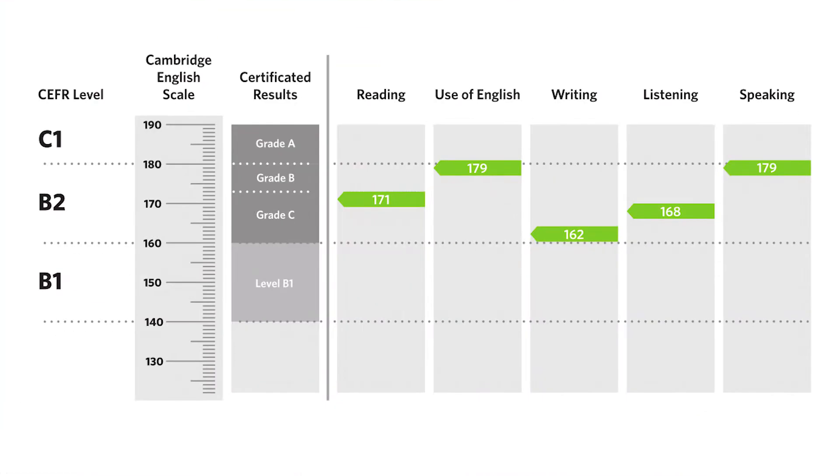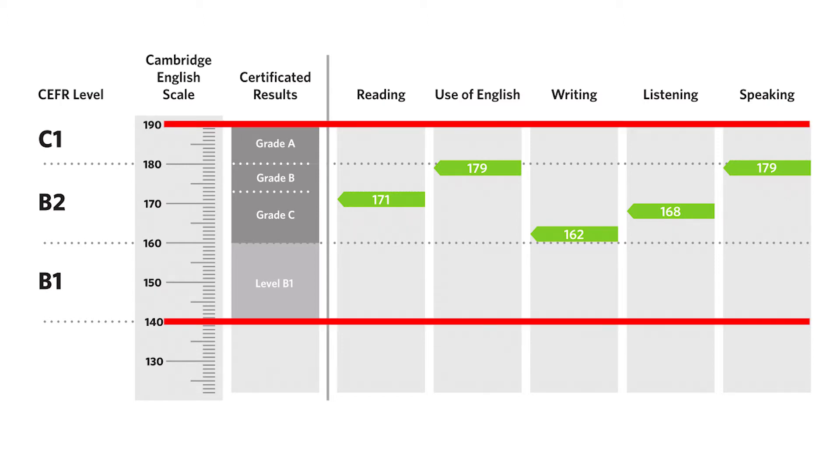Your statement of results when you do the real Cambridge exam looks like this. You will get between 140 and 190 marks for each part, and also for the overall exam. All the parts are equally important, but if you fail one of them, it doesn't really matter. Your overall score determines what level and what certificate you will receive.